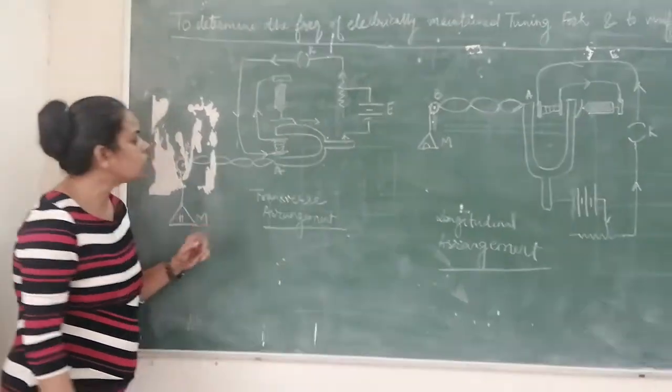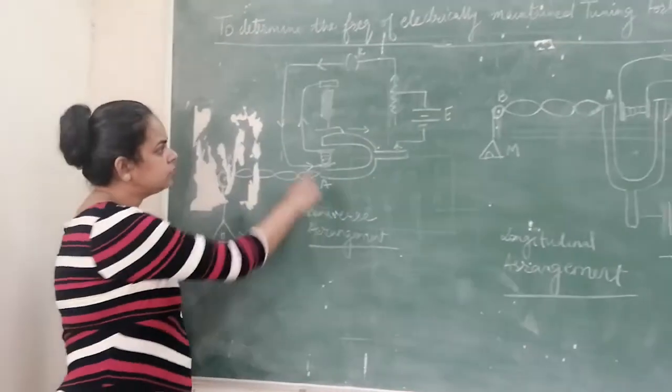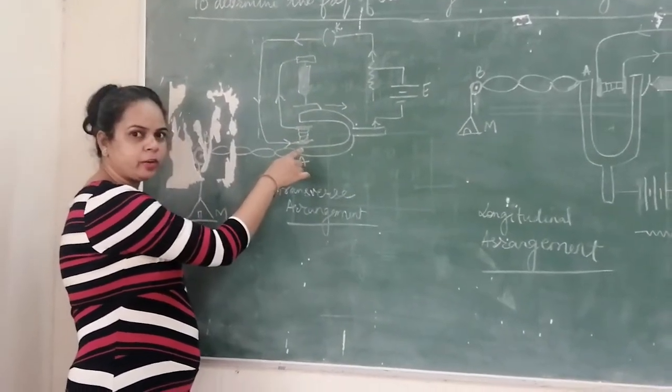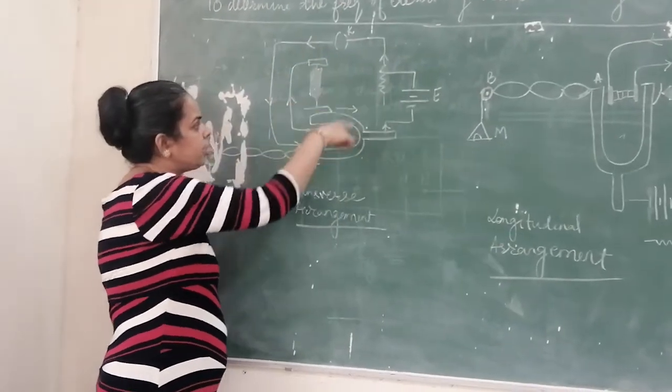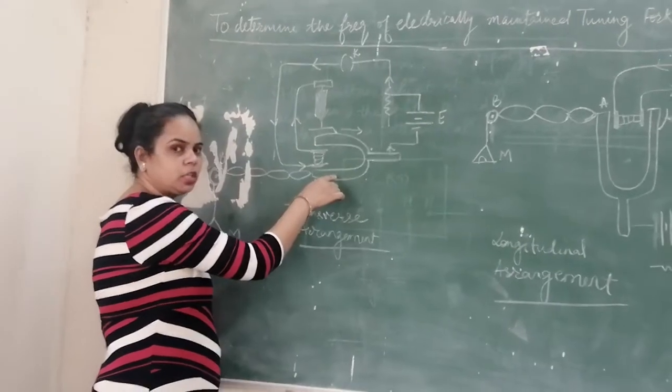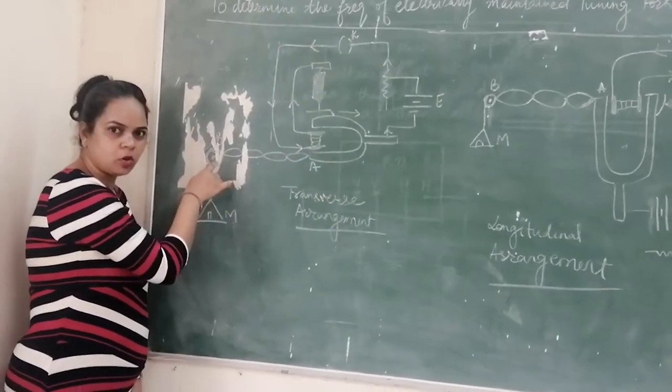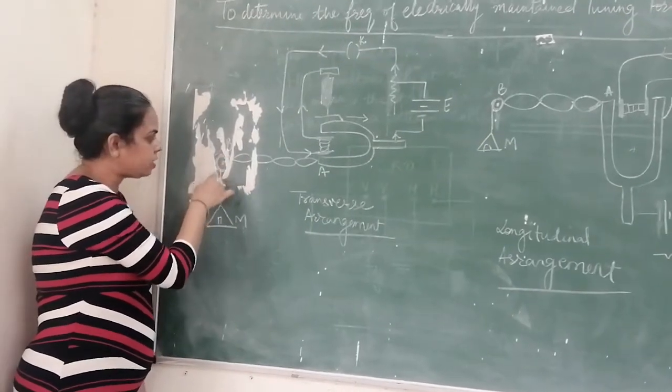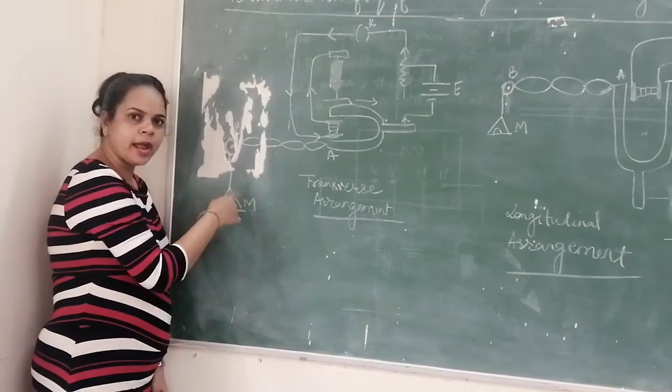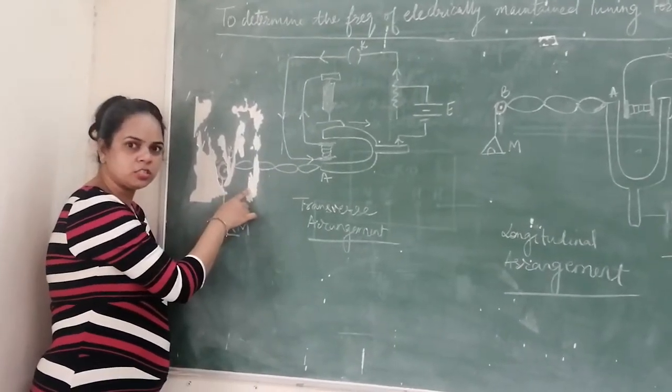This is your experimental arrangement of your Melde's experiment. This is your tuning fork. In between the tuning fork, you have placed the electromagnet and a battery is connected to the electromagnet. When this tool touches the plate connected to the tuning fork, it produces vibration in the thread or the string. And the thread is hanged with the weight support through a pulley. We go on adding the mass in the pan so the number of loops gets changed.